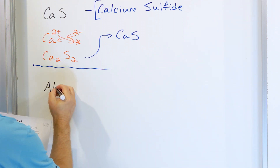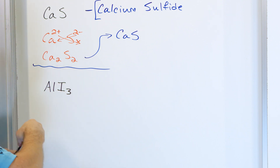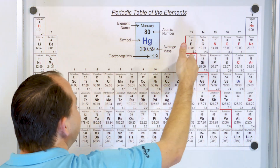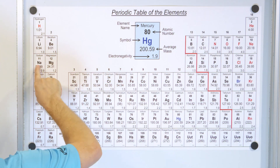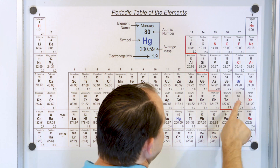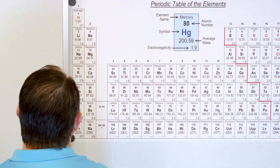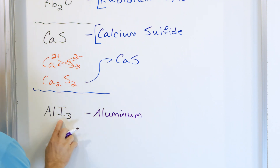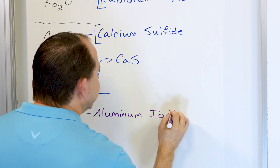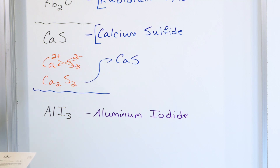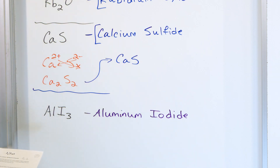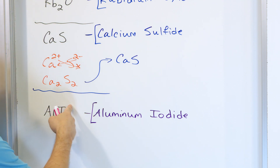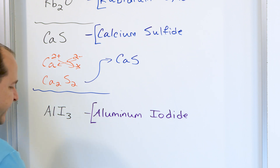Let's take a look at AlI₃ — aluminum and iodine. Where's aluminum on the periodic table? It's over here, and the stair-step line is here, so it is actually a metal. It's going to try to lose one, two, three electrons, and iodine is going to gain one electron. So it is a metal plus a nonmetal. The name of this compound is aluminum iodide. Double checking: aluminum wants to form a plus three charge, iodine wants to form a minus one charge. The one comes here and the three comes here — so this is the correct ionic compound.